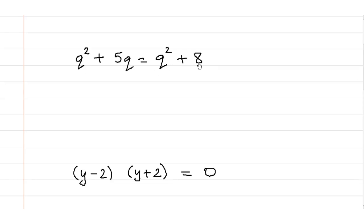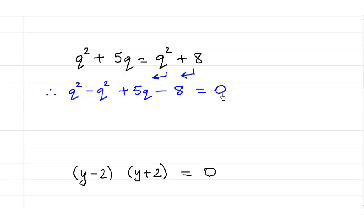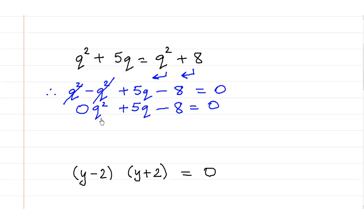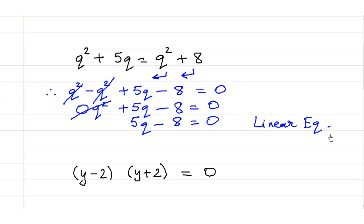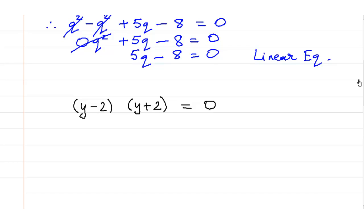Next: q² plus 5q is equal to q² plus 8. Bringing everything to one side: q² minus q² plus 5q minus 8 is equal to 0, which gives 0q² plus 5q minus 8 is equal to 0. The coefficient of q² is 0, so this is not a quadratic equation. We ignore 0q² and this becomes 5q minus 8 is equal to 0. In fact, this is a linear equation.